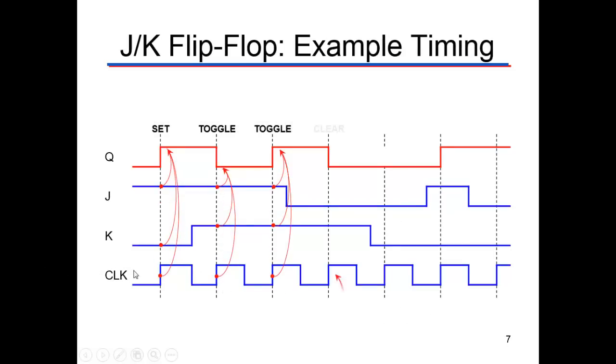So when we come here, we have K is zero, J is one. The clock comes by, so it changes Q to one.